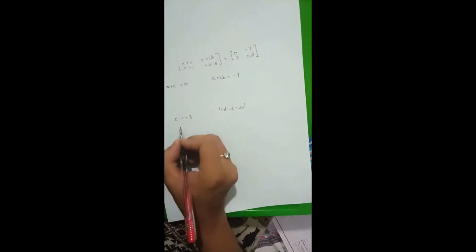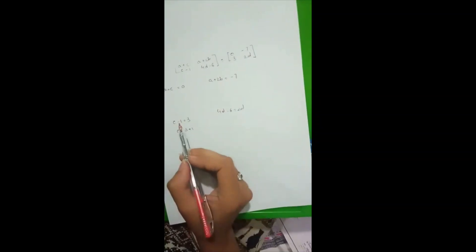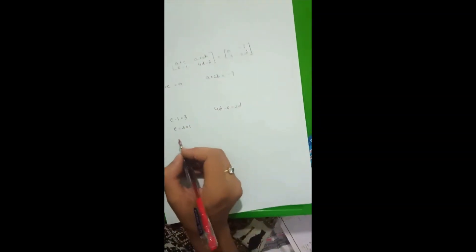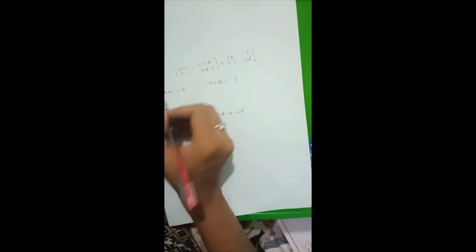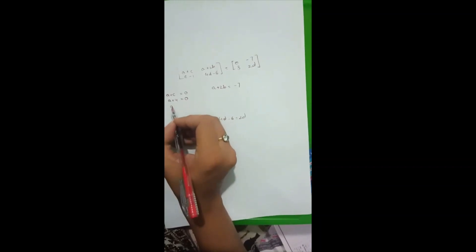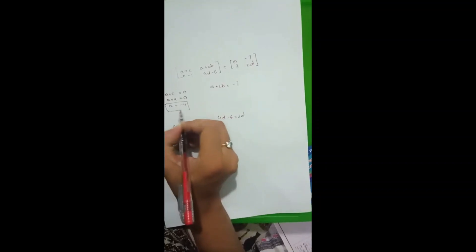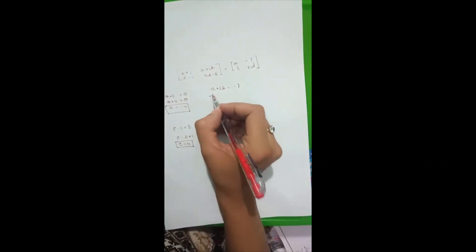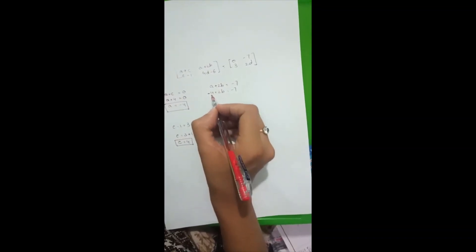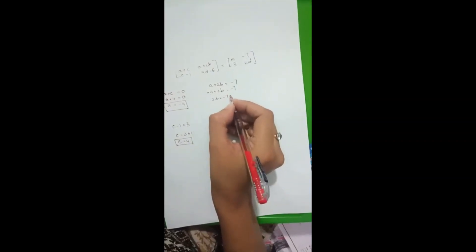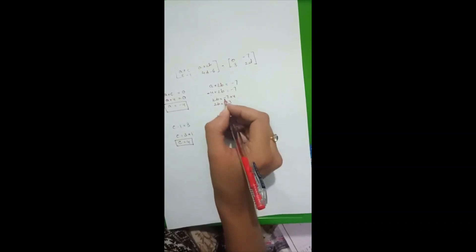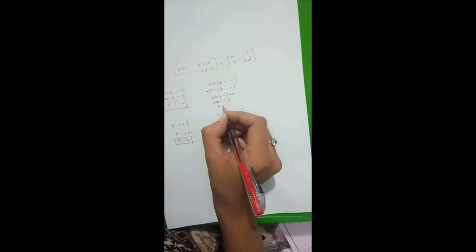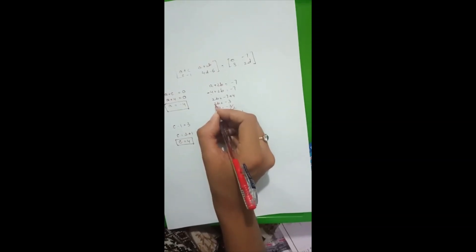First we solve c minus 1 equals 3. Moving minus 1 to the right-hand side gives us c equals 3 plus 1, so c equals 4. Substituting into a plus c equals 0 gives a equals minus 4. Substituting a equals minus 4 into a plus 2b equals minus 7: moving minus 4 to the right gives 2b equals minus 7 plus 4 equals minus 3, so b equals minus 3 over 2.